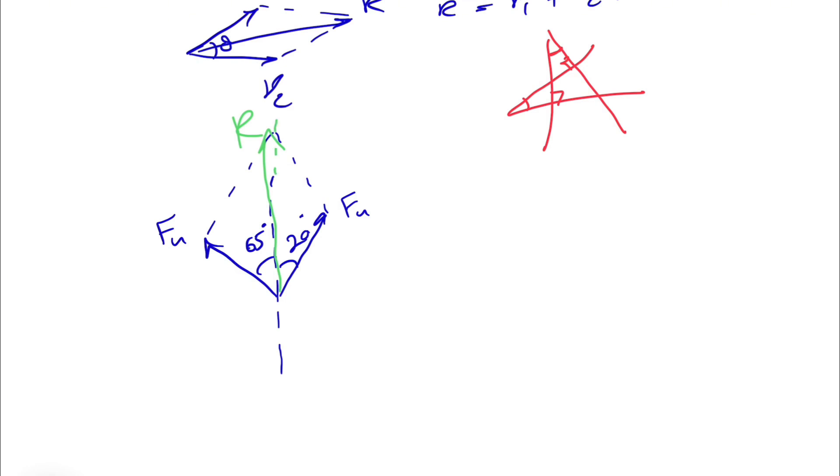Again obviously our R won't be on the vertical axis because they have different angles, but that's not what we're looking for in here. What we're looking for in this question is just to find the resultant. So R squared is equal to Fn squared plus Fn squared plus 2 Fn times Fn times cosine of what we have in here, which is basically 65 plus 20 degrees, so it will be 85 degrees.